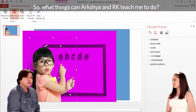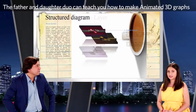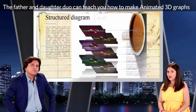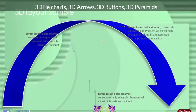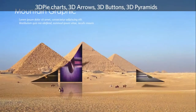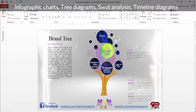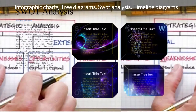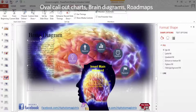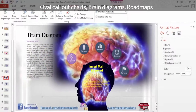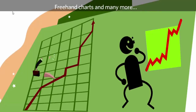So what things can Arshir and RK teach me to do? The father and daughter duo can teach you how to make animated 3D graphs, 3D pie charts, 3D arrows, 3D buttons, 3D pyramids, infographic charts, tree diagrams, SWOT analysis, timeline diagrams, oval call-out charts, brain diagrams, road maps, freehand charts, and many more.